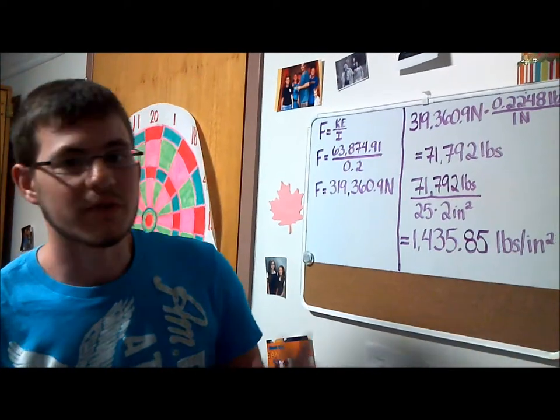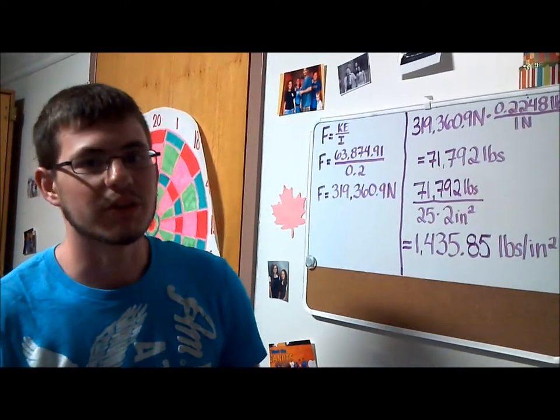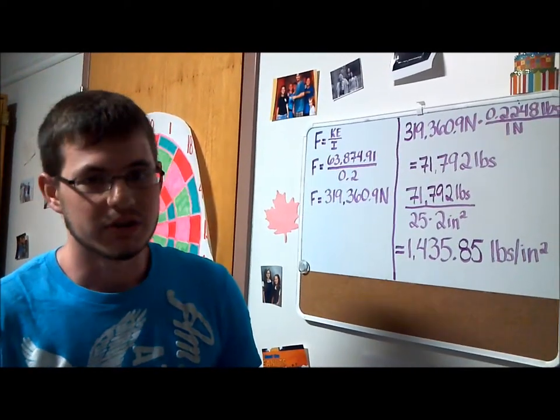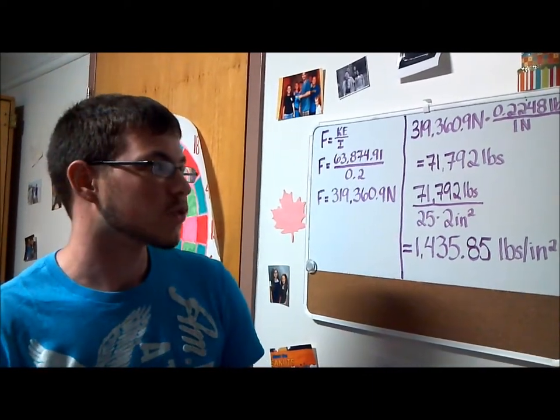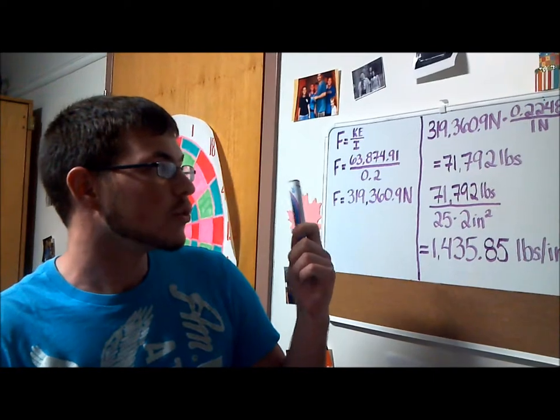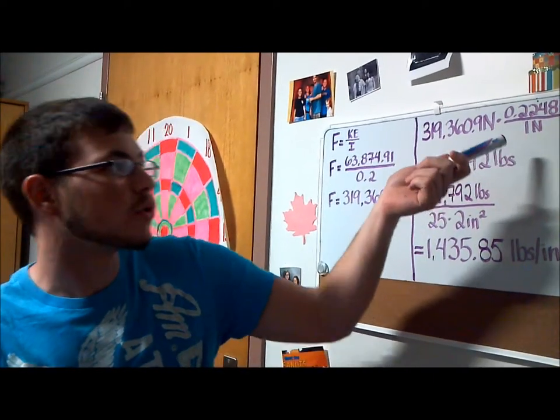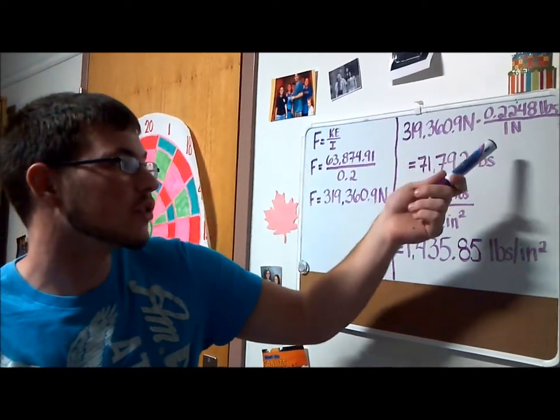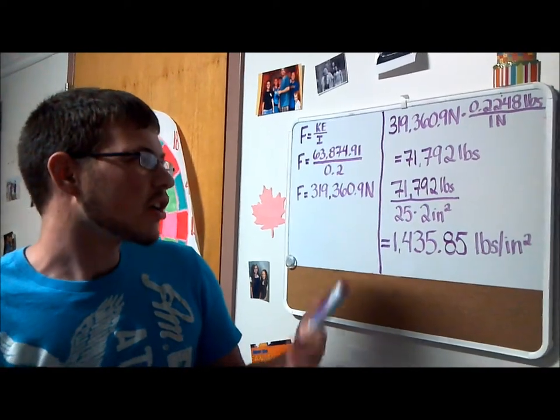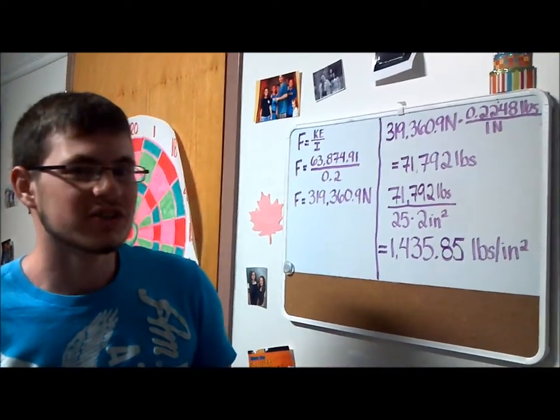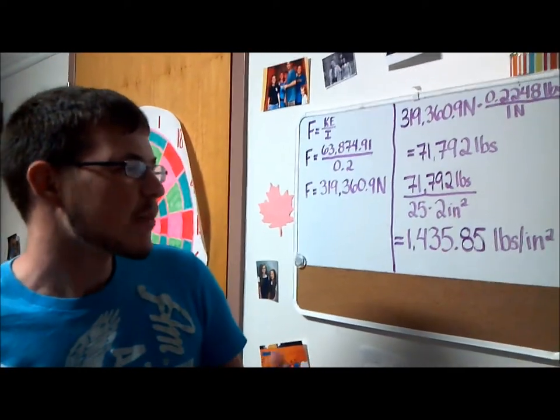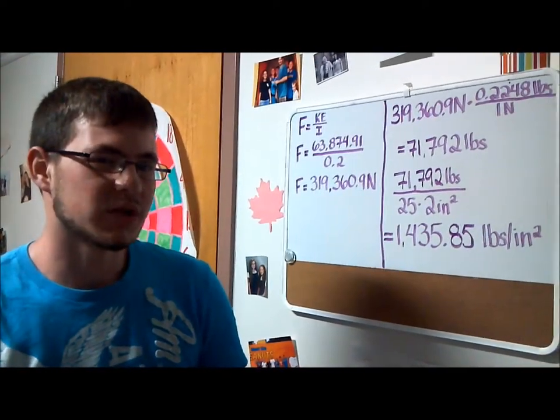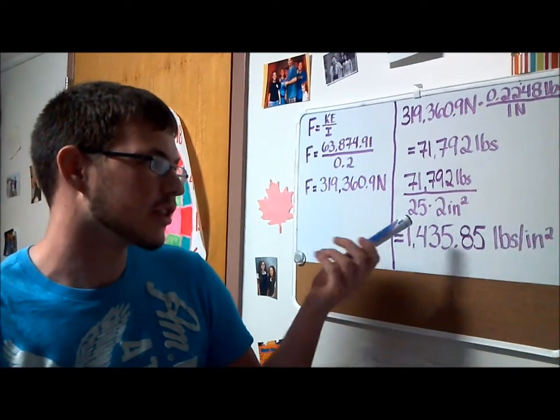After that, we decided to convert that to pounds per square inch, because whenever we were researching how much force was required to break a bone, it was always in pounds per square inch. To do this, we used the equation of 0.2248 pounds per newton, and then estimated that he had about 50 square inches of surface area hitting the water, because we estimated about 25 square inches of surface area per foot, and for each foot hitting the water, we got 1,435.85 pounds per square inch.